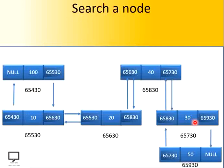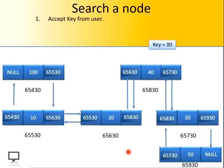For this, let's consider I am having a doubly linked list with six nodes and I want to perform a search operation on it. For that, we are supposed to accept a key from the user which we want to search. Let's consider my key is 30, which I want to search.